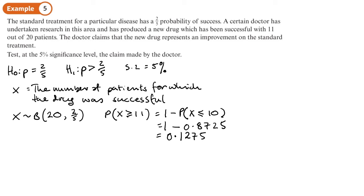So what does this mean? This means if there was nothing had changed with the drug and I pick 20 people and the drug was successful on 11 or more, there's basically a 12.5 or 12.75% chance of that happening.